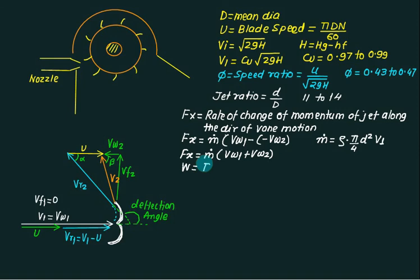The work done per second - work done is basically defined as force multiplied by displacement. We have Fx multiplied by u. In one second the blade will move by u meters.